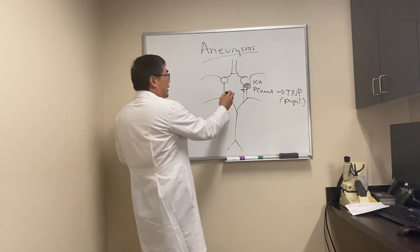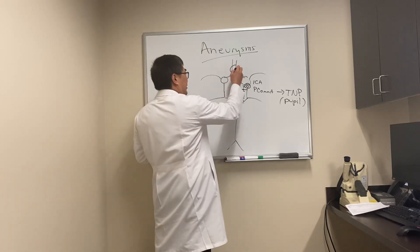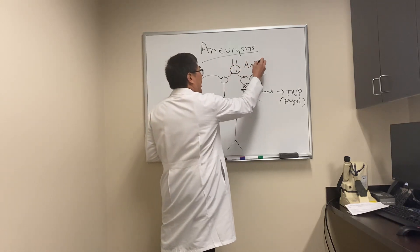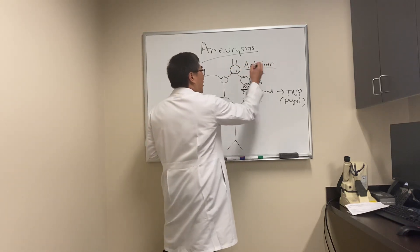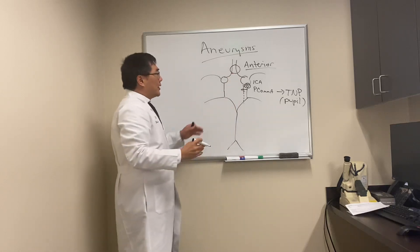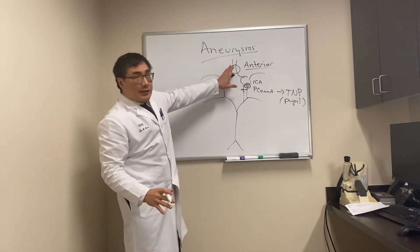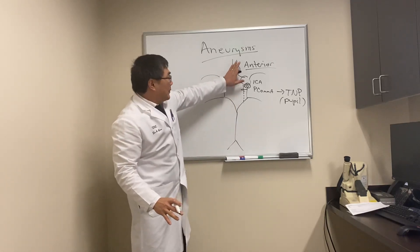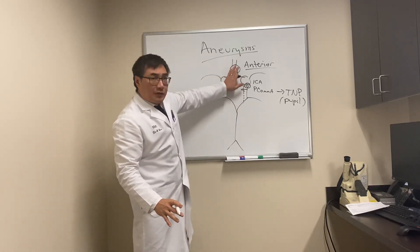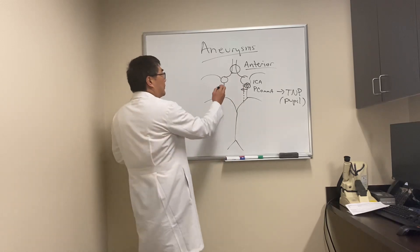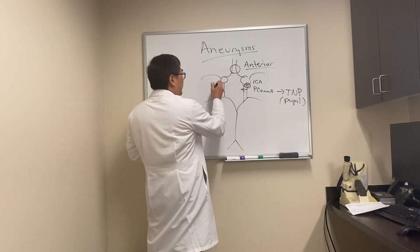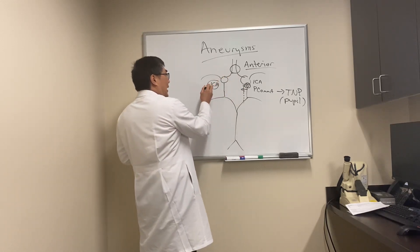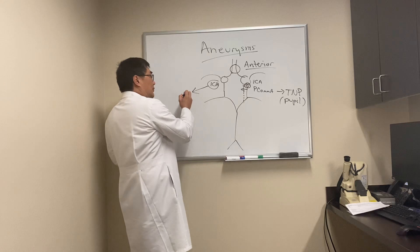Because the pupil fibers are on the outside of the nerve, it often produces a painful, pupil-involved third nerve palsy. In addition, anterior communicating and anterior cerebral artery aneurysms can compress the optic nerve on one side or both sides, because the optic nerves are very close to the anterior circulation.